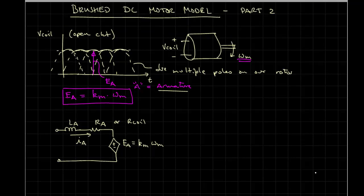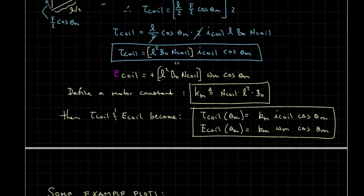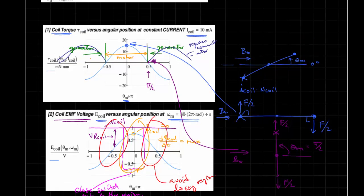We're now ready to develop the mechanical side of our electric motor, drawing upon the rotational dynamic systems we have looked at. As we saw in the first part of this series, a torque is induced on the rotor due to current flowing. The torque is equal to the motor constant times the coil current times cosine theta_m.